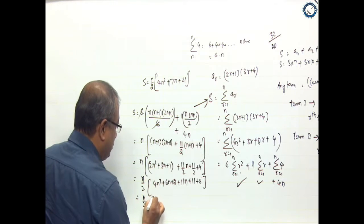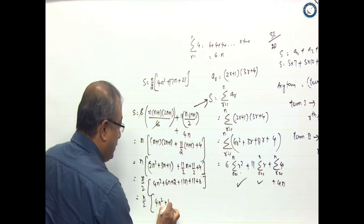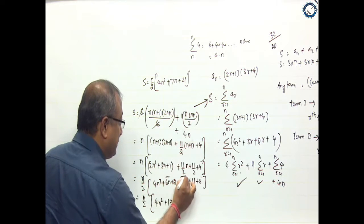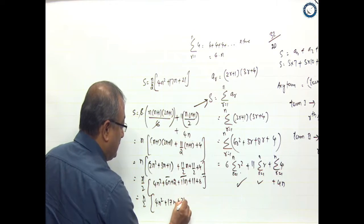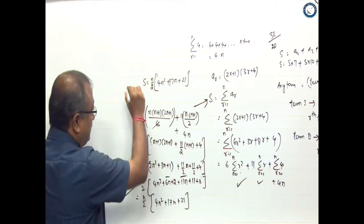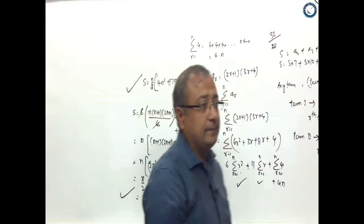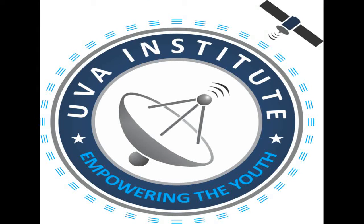This will become n/2 times (4n² + 17n + 21). Here's the calculation: 6n + 11n = 17n, and 2 + 8 = 10, 10 + 11 = 21. This is my final answer. Thank you.